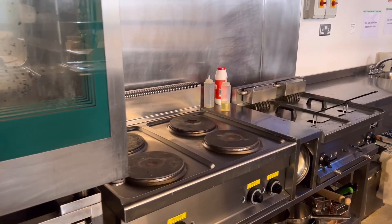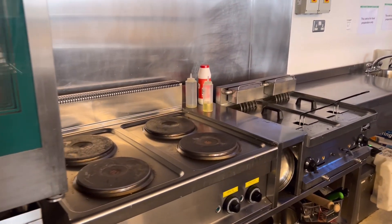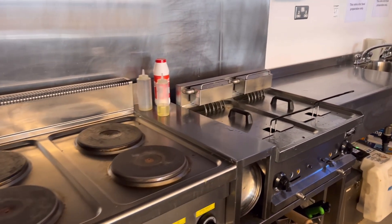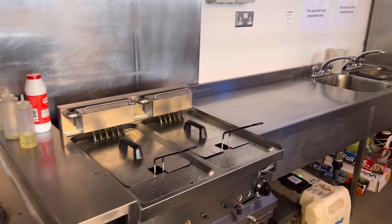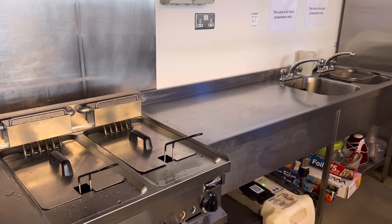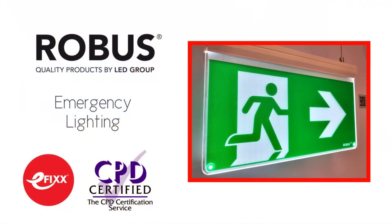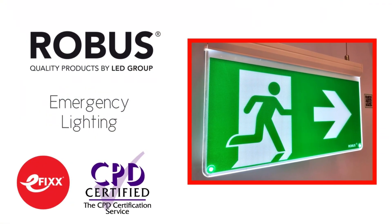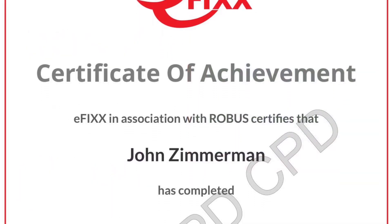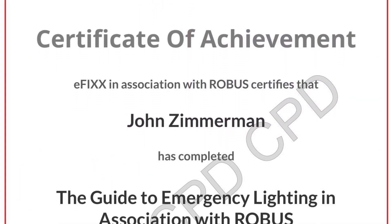In this Q&A video we're going to answer the question: what is high risk task area emergency lighting and how do you provide it? Just before we explain the answer, please be aware that this video is one of a series made on the subject of emergency lighting in association with Robus. They can be viewed individually or you can click the link in the description below to view them as part of a free online training package to help you with your CPD, and you'll receive a certificate.